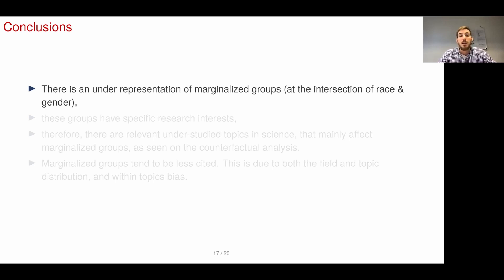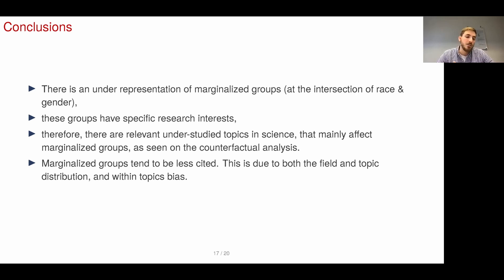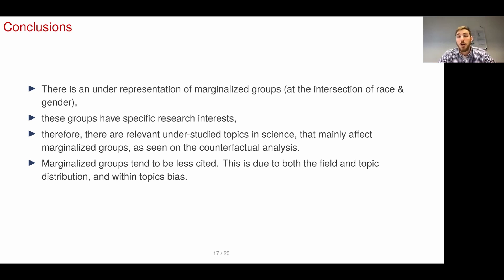To conclude, we have seen that there is an underrepresentation of marginalized groups at the intersection of race and gender, that these groups have specific research interests, and therefore there are relevant understudied topics in science — those that mainly affect marginalized groups — as also shown in the counterfactual analysis. We have also seen that marginalized groups tend to be less cited, due both to field and topic distribution and to a within-topic bias. Thank you very much, and I hope to hear your questions.